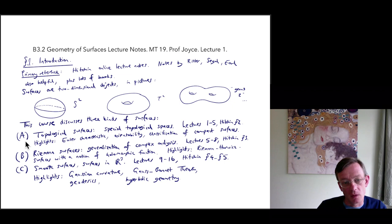The second notion of surface is Riemann surfaces. So these are a generalization of complex analysis, and are surfaces which have a notion of holomorphic function. So Riemann surfaces are topological spaces together with an extra geometric structure, the structure which tells you which complex functions on surfaces are holomorphic broadly.